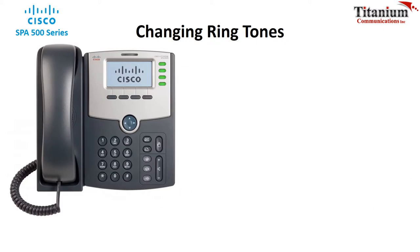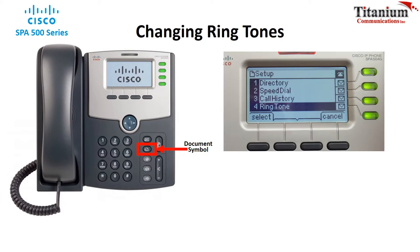We now need to access the ringtone key. On the phone, press the document symbol. Using the joystick, scroll down to option 4, ringtone, and press select.